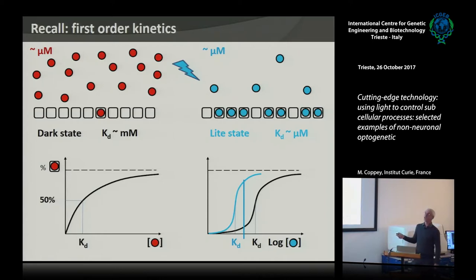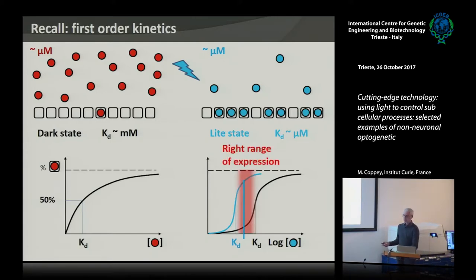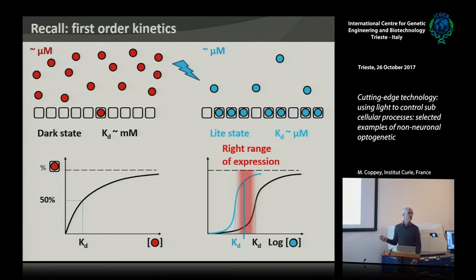If you think about this: you have a given KD in the dark and a given KD in the light, so what you want is to express your protein right in the middle — so in the dark it's not bound, and under light it will be bound. This means there is an optimal expression range. When an experiment doesn't work, there are two possibilities: either you express too much protein so it's already bound in the dark and you see no difference; or the expression is too low and even with light the concentration is too low for binding. You need to tune the concentration. The fold-change is typically large — several hundred-fold — so you don't need to fine-tune, but you need to know roughly whether you're in the micromolar, millimolar, or nanomolar range.